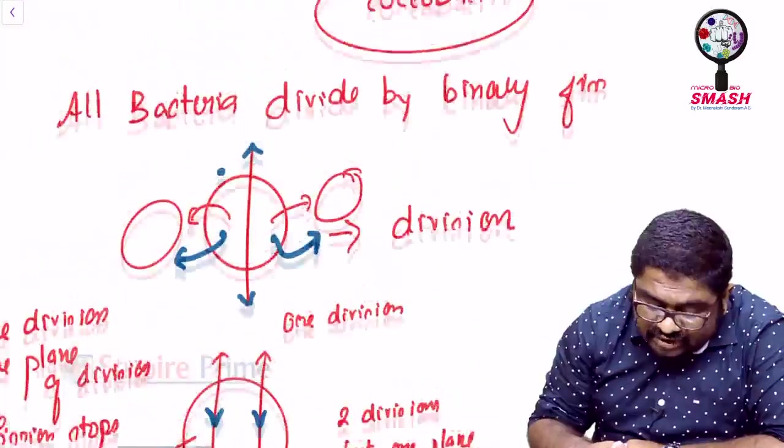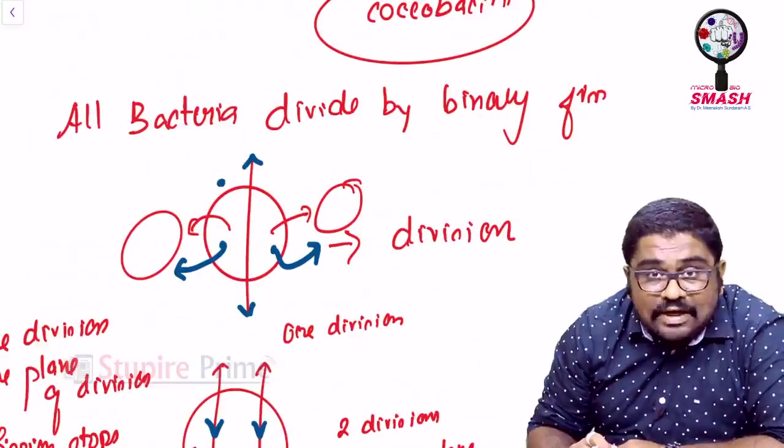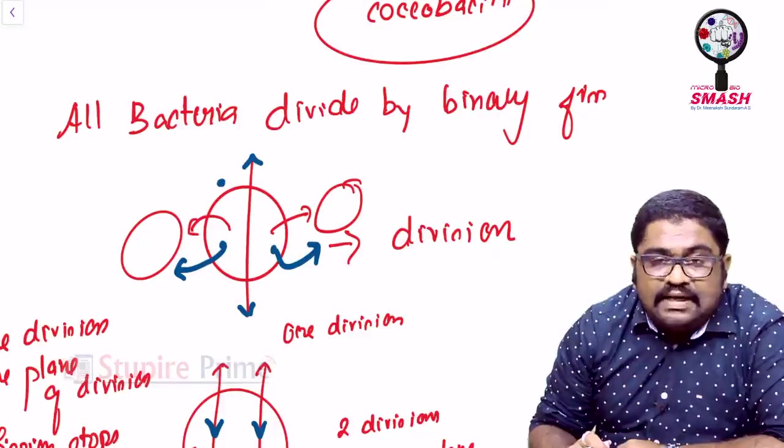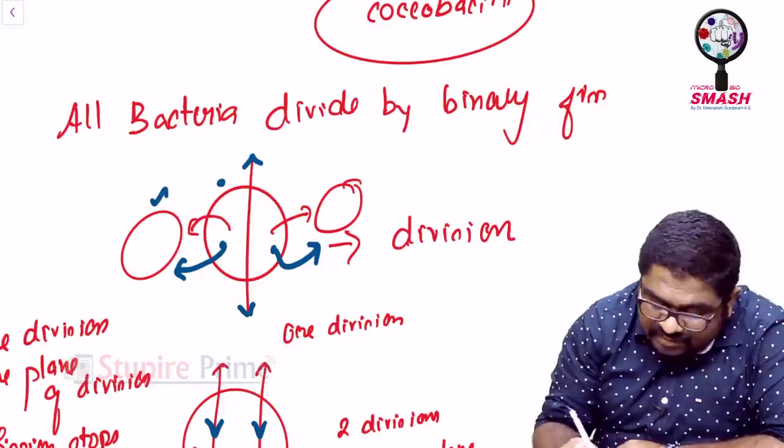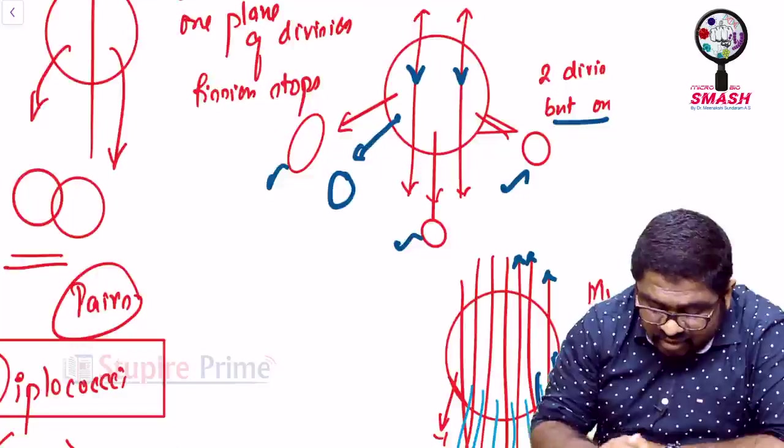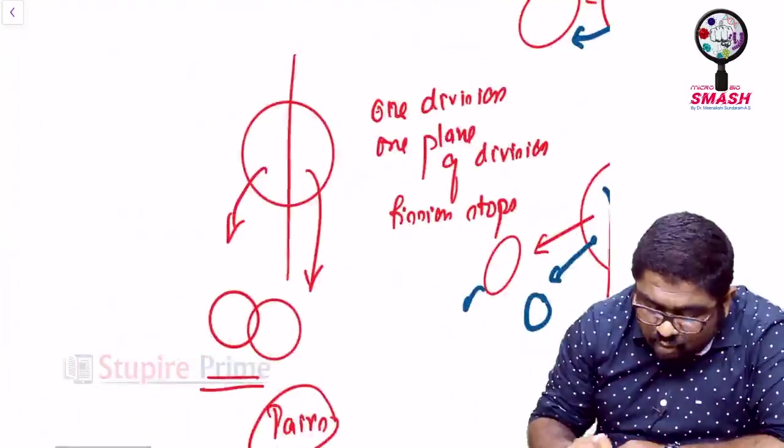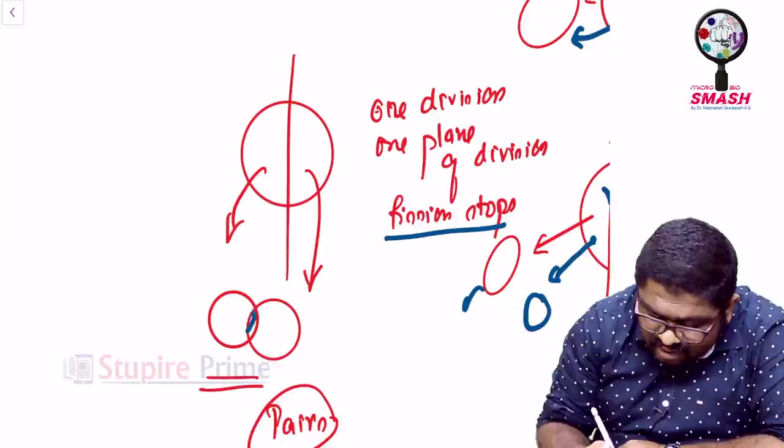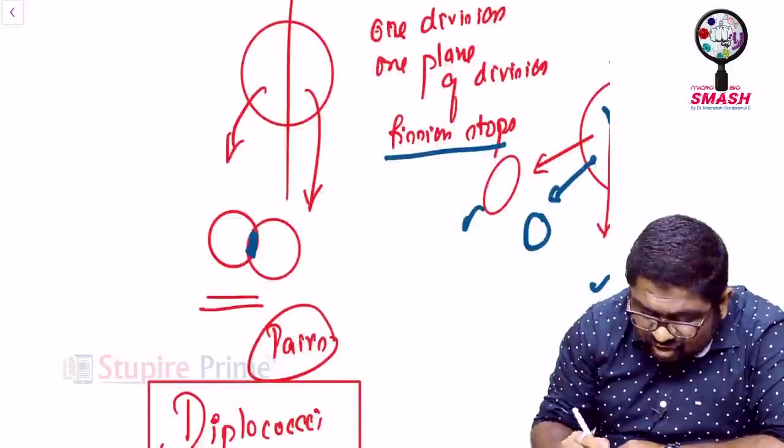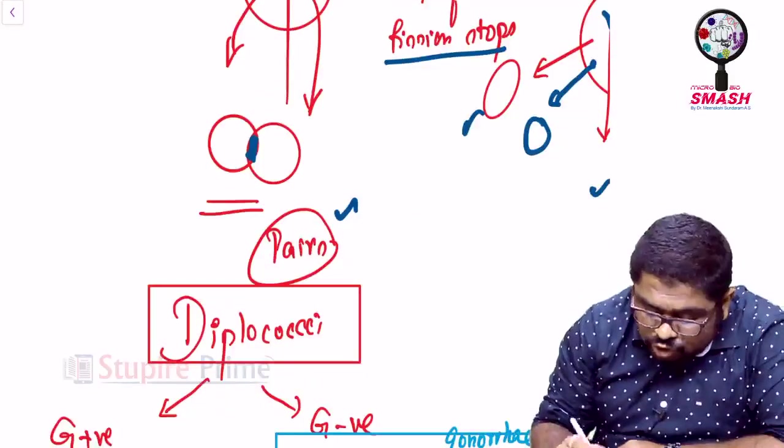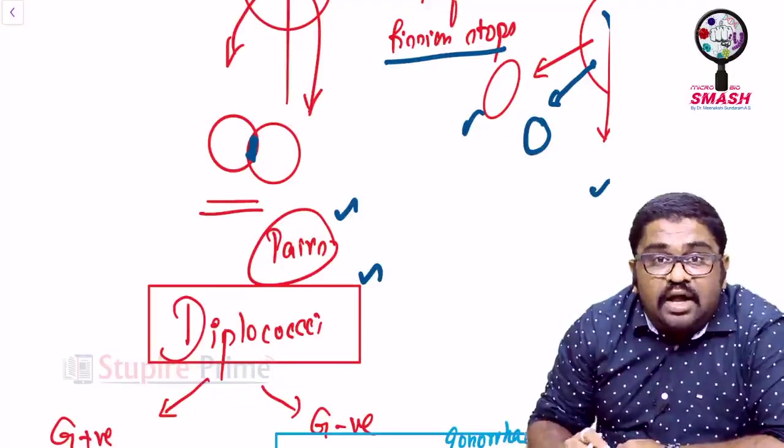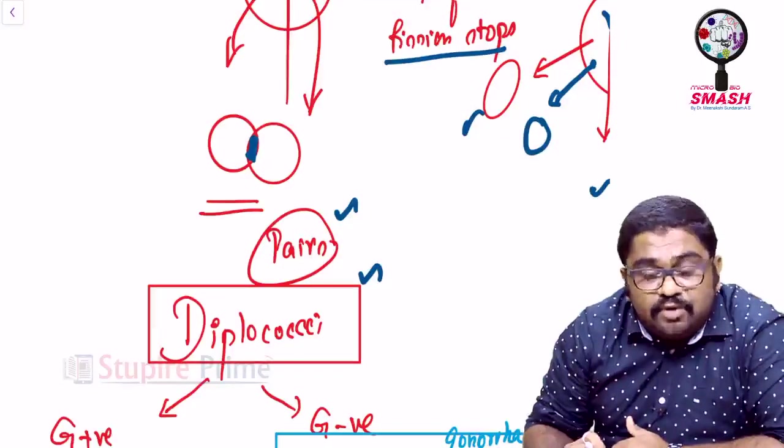Now, look at this. If I go for a single division, and there is only one plane of division, and I stop abruptly at that, then what am I left with? I am just left with two cocci together. So, when one plane of division and one division happens, fission stops, then I will be having a two cocci together. This is called as pairs of cocci, also referred to as diplococci.